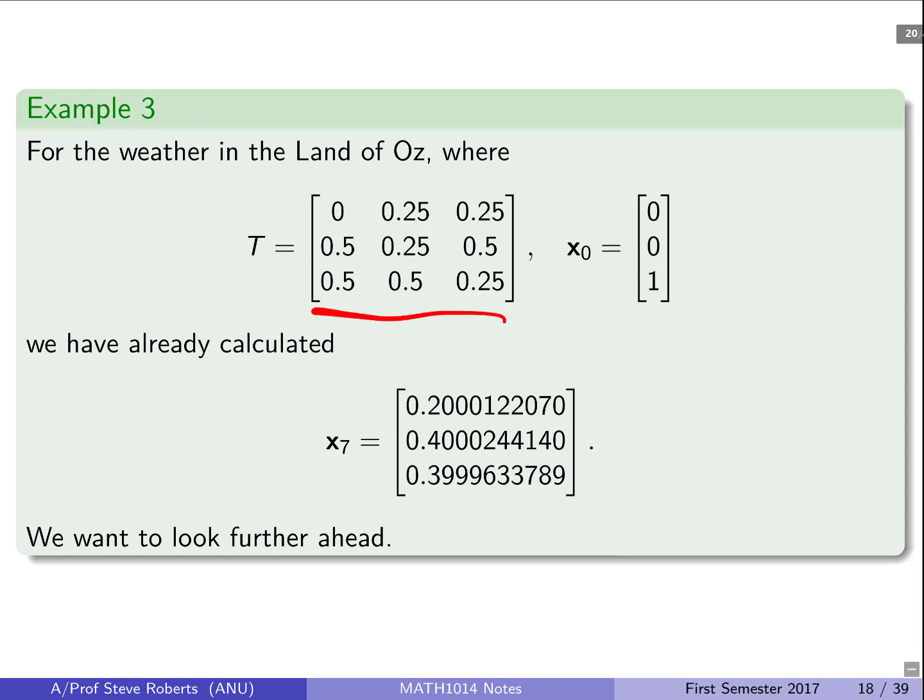So the fractions are actually getting a little messy now. So why don't we go and start using decimals instead? So here they are using decimals. We can plug this into our favourite numerical software package and then calculate out what the weather would be at the end of the week. And we get these results here. And you notice they're actually starting to look a bit like .2, .4 and .4. So it seems like there may be some limiting behaviour going on here.